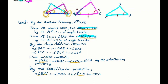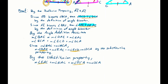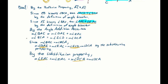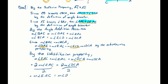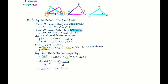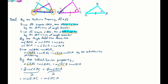Now it's almost like algebra. This equals two times the measure of angle EAC, and the right side is two times the measure of angle DCA. Divide both sides by two and you get: measure of angle EAC equals measure of angle DCA. All that work, but it got me where I wanted — angle EAC on the purple is congruent to angle DCA on the blue.